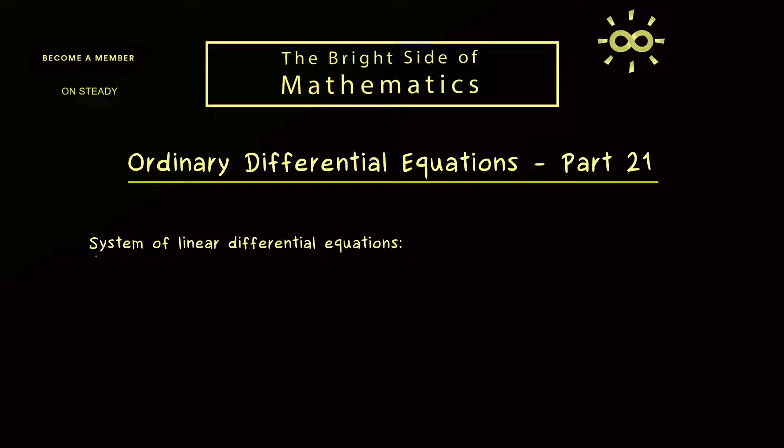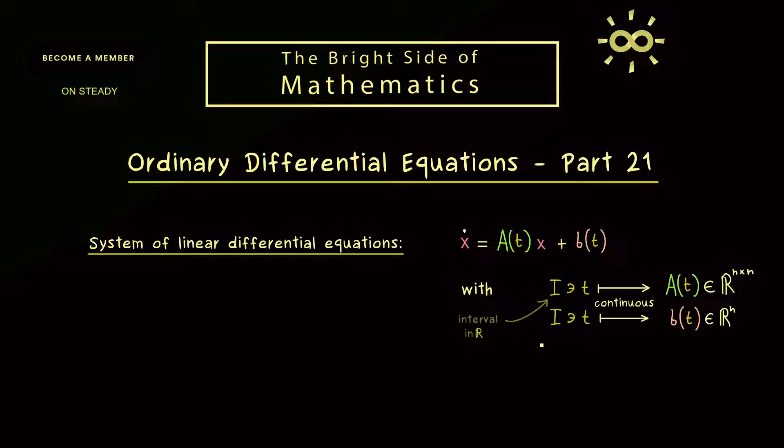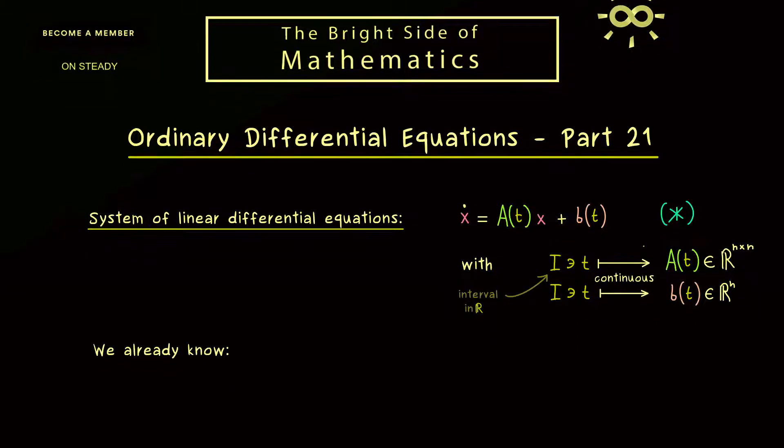Okay, then let's immediately start with our system of linear differential equations. In the general case this system is always written as ẋ = A(t)x + b(t). And there we have two important ingredients. First, in the domain of the time variable we have an interval or the whole line ℝ, and we have a continuous mapping from this interval into the matrices and into the vectors in ℝⁿ. So this is our system of linear ODEs. And let's call it star for the sake of this video.